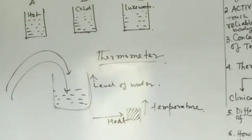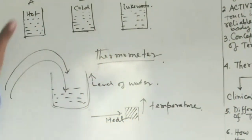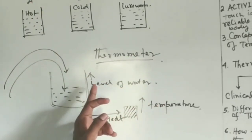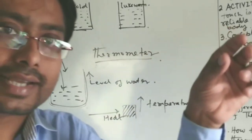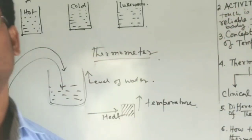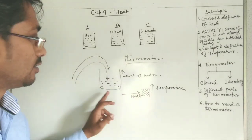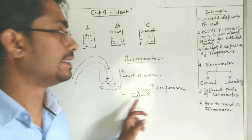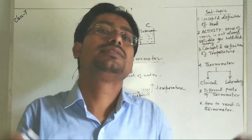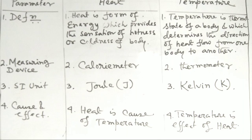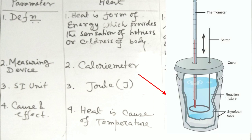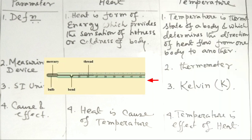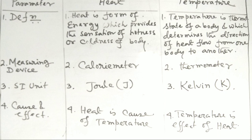Just as water flows from a higher level to a lower level, heat flows from higher temperature to lower temperature. Heat is the cause and temperature is the effect. Heat is measured by a calorimeter, while temperature is measured by a thermometer. The SI unit of heat is the joule, and the SI unit of temperature is the kelvin.